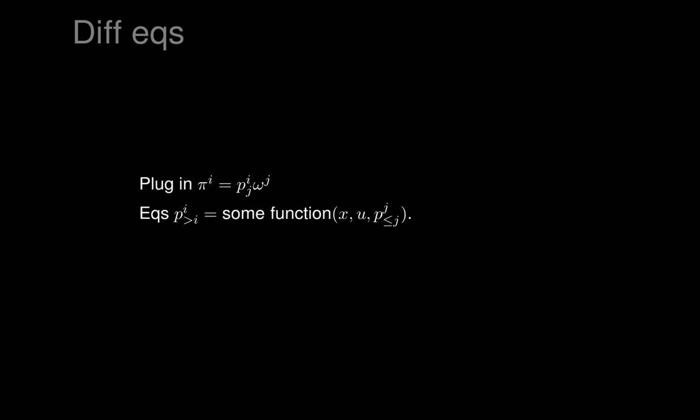We plug in that the pi's are some multiples p times omegas, and then figure out what equations on those p's give us integral elements. Among our equations, we find equations that express the negative-grade coefficients in terms of positive or semi-positive grade coefficients. So the integral elements are parameterized by setting the pi's to be p times omegas and solving some equations for the p's. Among those equations, some tell us how to write the negative-grade p's as functions of the x's, the u's, and the semi-positive-grade p's.